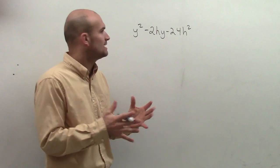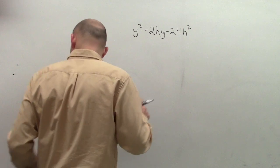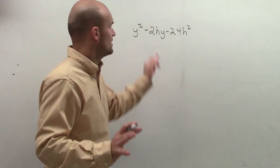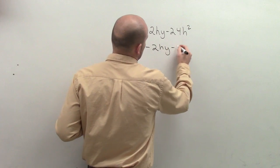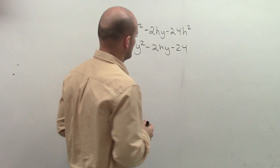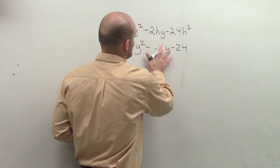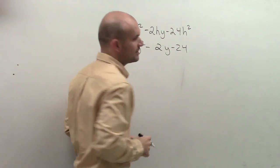But what I'd like you guys to do is just think about this. Let's for one time forget about the h's here. Let's just look at this as y squared minus 2hy minus 24. Let's forget about the h's and just look at it like that.